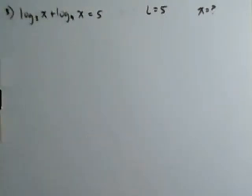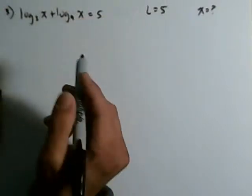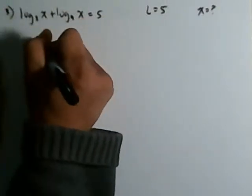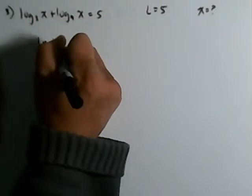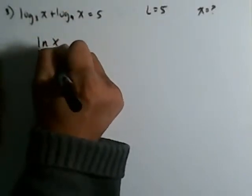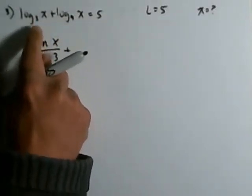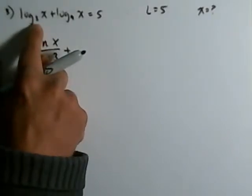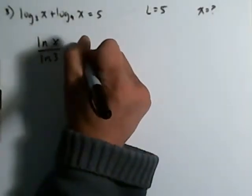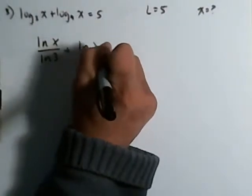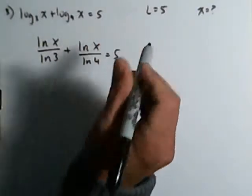So the problem with this is you have log base three and log base four, so we have to use the change of base formula. I'm going to use natural log this time. Natural log of x divided by the natural log of three — that's how we change it from base three to base e. We do the same thing: natural log of x over the natural log of four, and that's equal to five.